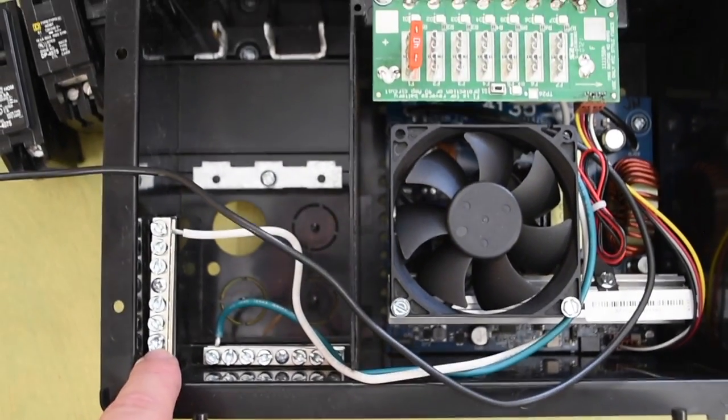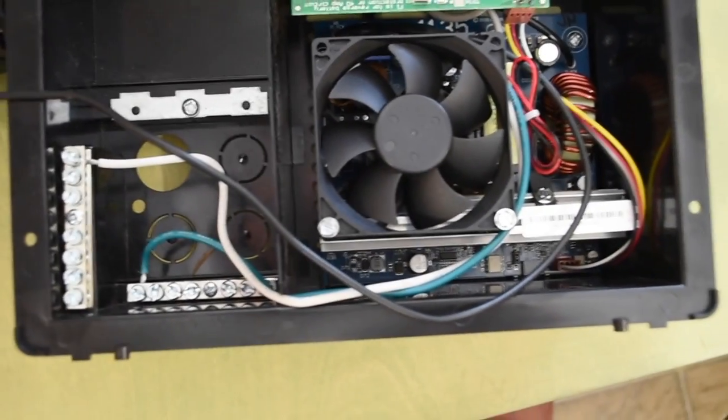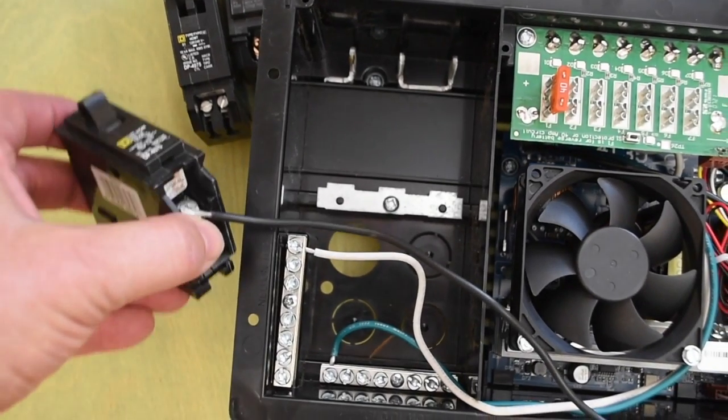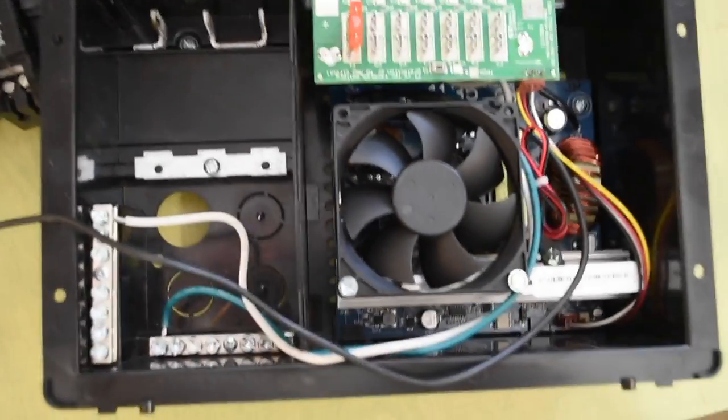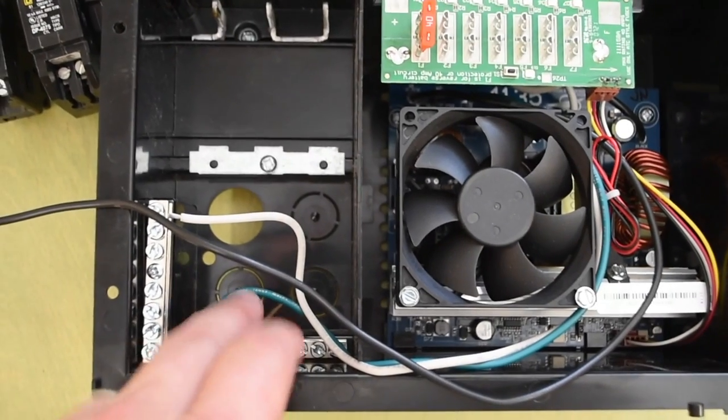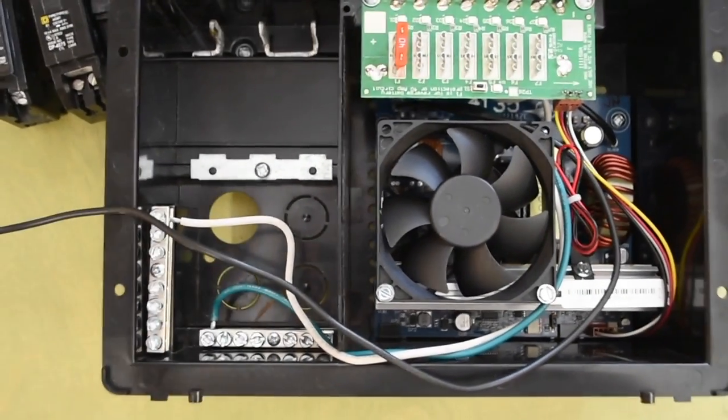The black wire ties into your circuit breakers, usually at the bottom on a screw like this. And then there's a grounding bus bar here at the bottom that generally ties to your chassis.